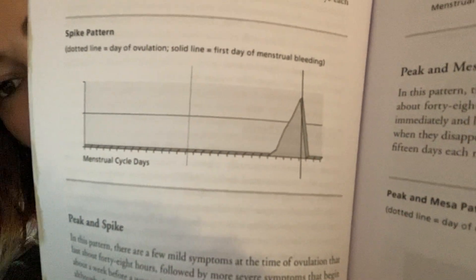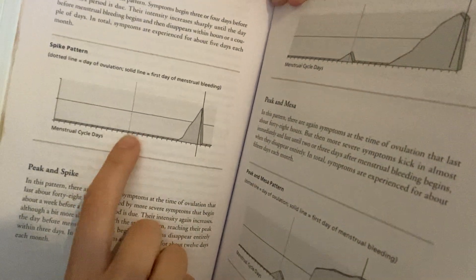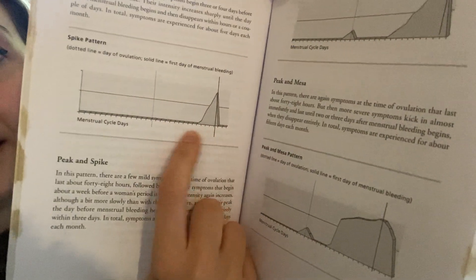Number one is the spike pattern. This is me and this is my cycle. The spike pattern is the most common pattern. Symptoms begin three or four days before a woman's period is due. Their intensity increases sharply until the day before menstrual bleeding begins, and then disappears within hours or a couple of days. My symptoms reduce within hours of bleeding. In total, symptoms are experienced for about five days each month. The dotted line means ovulation starts and the solid line is the first day of menstrual bleeding.